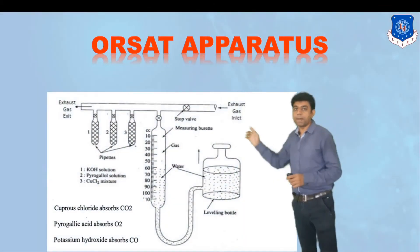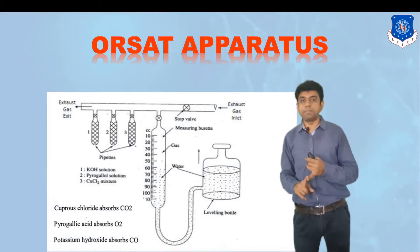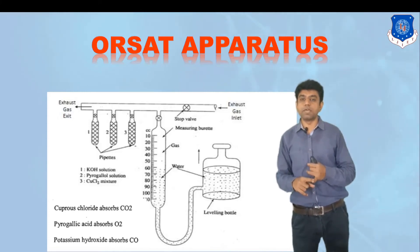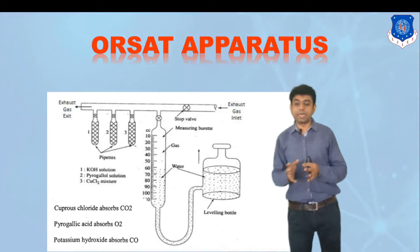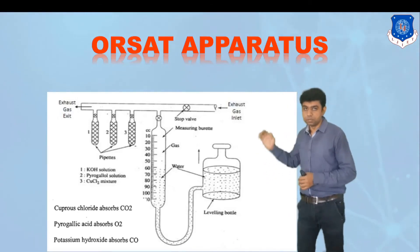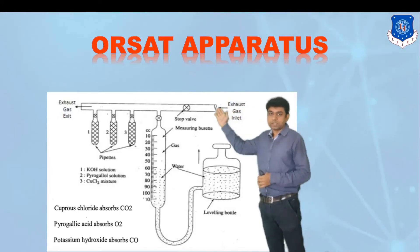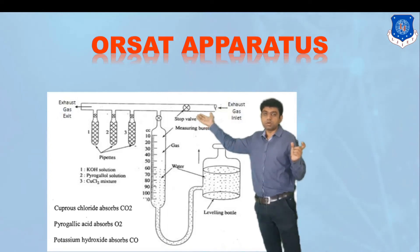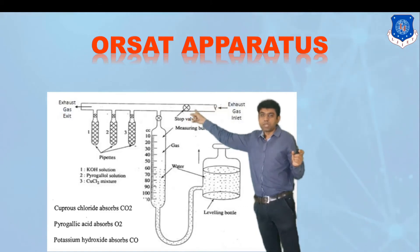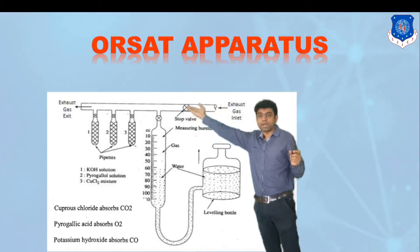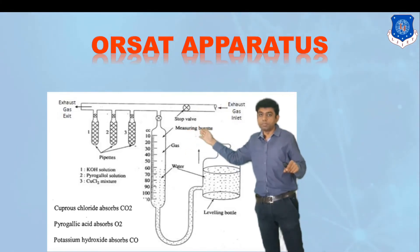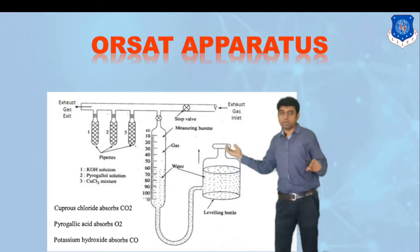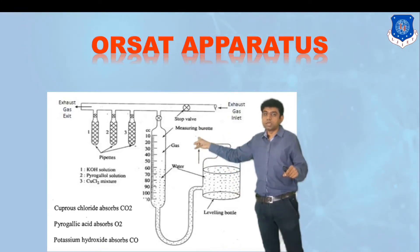The three pipettes contain three different chemical solutions: pipette number one has potassium hydroxide solution, pipette number two has pyrogallic acid solution, and pipette number three has cuprous chloride mixture. First, a sample of exhaust gas of known quantity — say 100 cc — is taken inside the chamber. The valve and the exhaust gas exit valve are kept closed so that the 100 cc of gas remains in the measuring burette, with the water leveling bottle kept low.